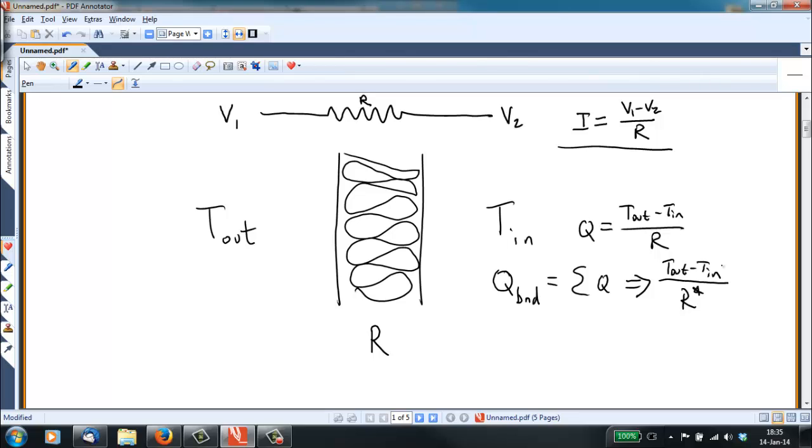Now when we're dealing with heat transfer in a house or a structure, we often, we will break from the electrical analogy here because we usually don't treat things in terms of resistances. We usually treat them in terms of conductances. Since conductance is the reciprocal of resistance, then we can write that Q_BND is equal to some constant K times T_out minus T_in.